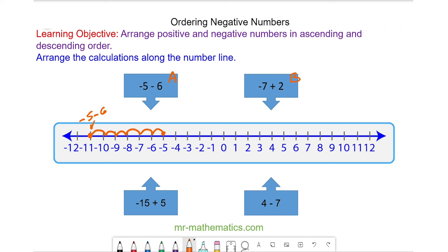And for the next one, negative 7 plus 2, we start at negative 7. And because it's a plus, we're going to our right and we're going two places. So this is negative 7 plus 2.